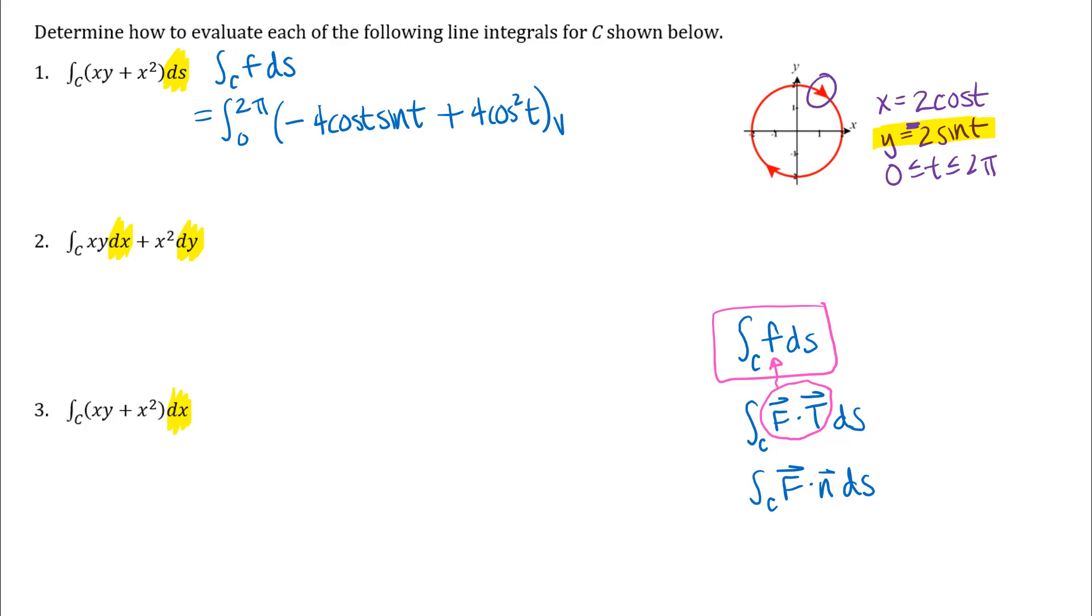And one thing that students sometimes forget about these arc length integrals is that that ds is an arc length differential. So way back when we first did arc length of parametric curves we talked about using the distance formula as a way to represent that arc length. And so I've got this dx dt the quantity squared plus dy dt the quantity squared dt. So all of this is my ds differential.